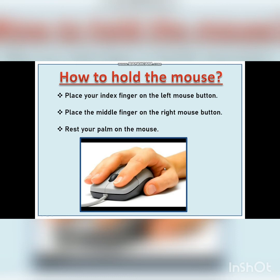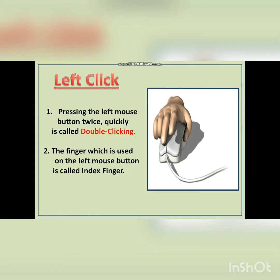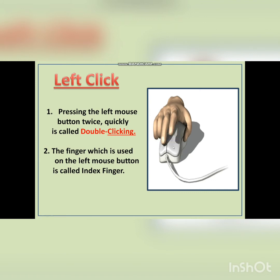You can operate the mouse very easily. Left click: Pressing the left mouse button twice quickly is called double clicking. The finger used on the left mouse button is called the index finger. In the video provided on the slide, you can see the person clicking the left mouse button with his index finger, and when he presses it twice quickly, that is called double clicking.